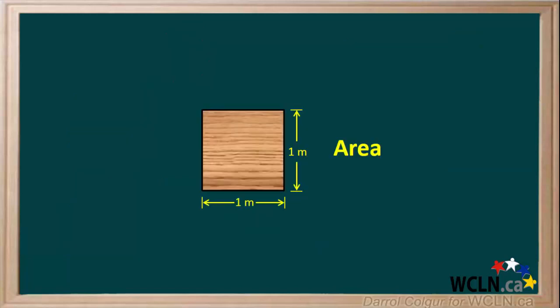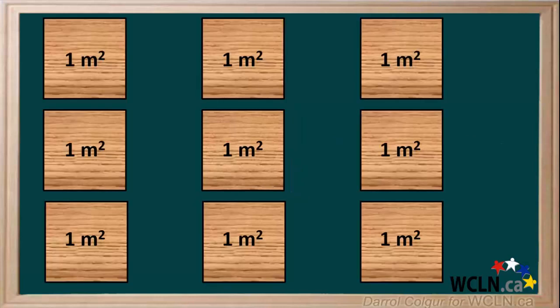The area of 1 sheet is 1 meter times 1 meter, which is equal to 1 meter squared, or 1 square meter. They have a total of 9 sheets, and each sheet has an area of 1 square meter. If they assemble these sheets to make a square deck, how long do you think each side of this deck will be?